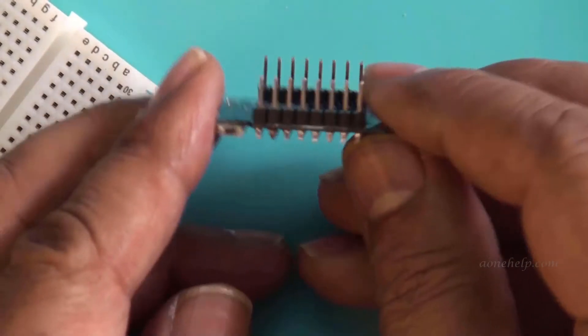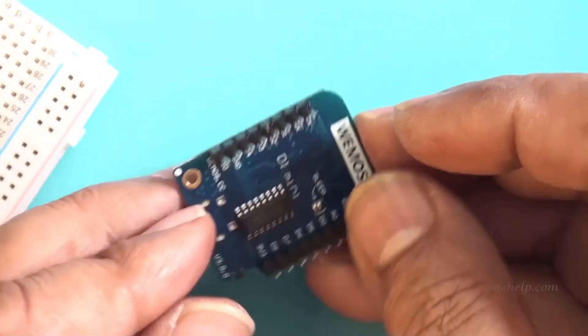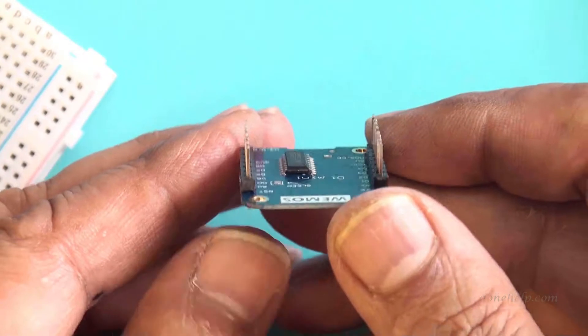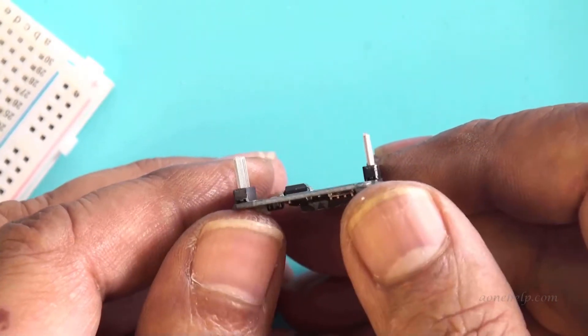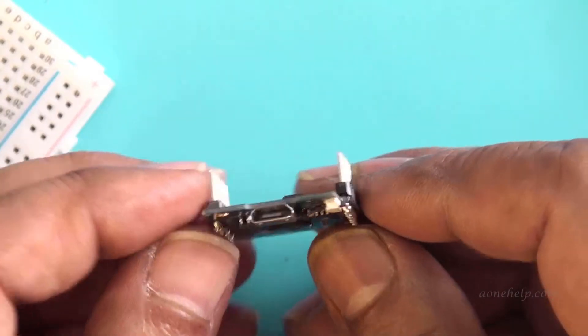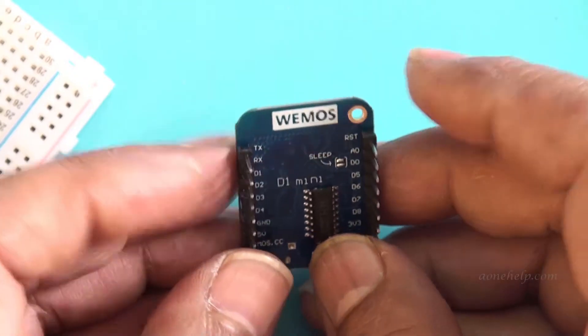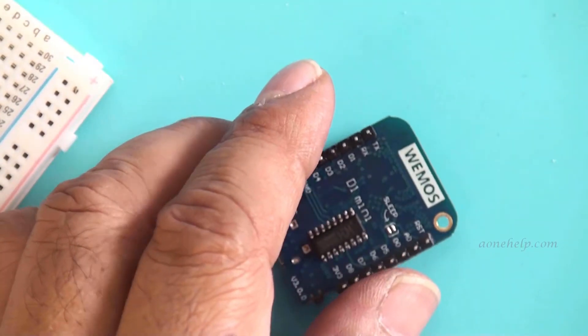We can see that all the solders are conical in shape and are shining. We can also see that there is no gap between the module and the headers and the headers are at right angle with the module. Now we can use this module with the breadboard or can solder this on PCB and use. Using the same procedure, we can solder any type of headers with any module. Let's conclude this video here.